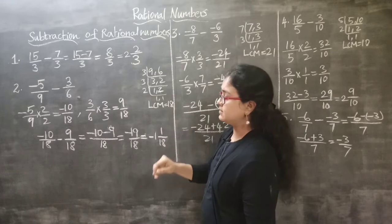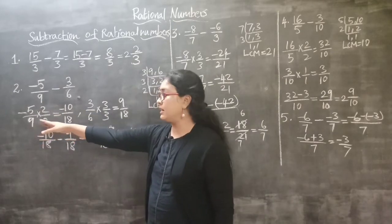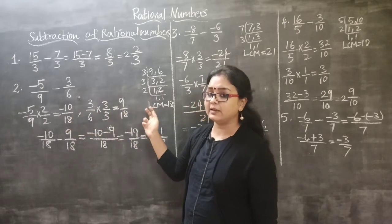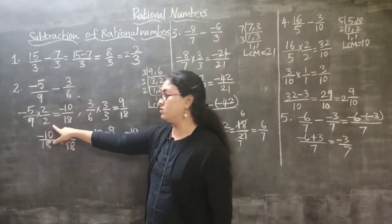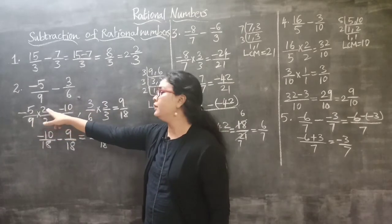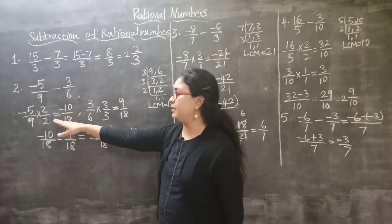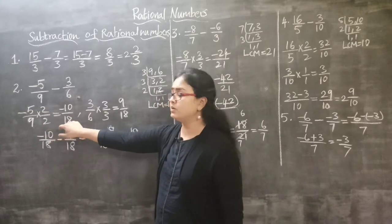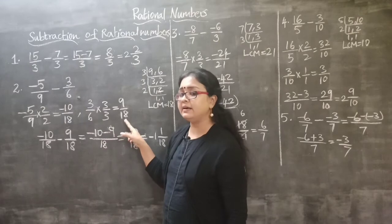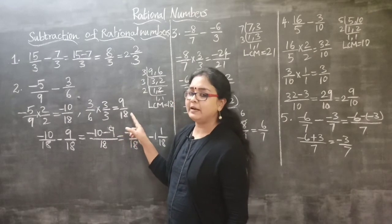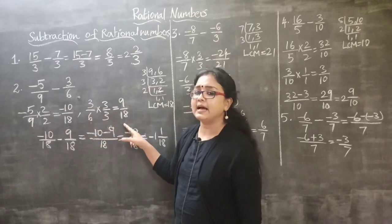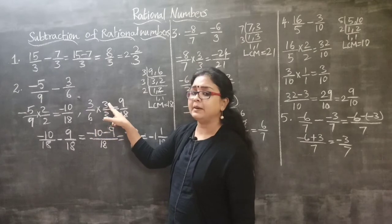For minus 5 by 9, I need to make the denominator 18. Since 9 times 2 equals 18, I multiply both numerator and denominator by 2. So minus 5 by 9 multiplied by 2 by 2 gives minus 10 by 18. For 3 by 6, I need the denominator to become 18 as well. Since 6 times 3 equals 18, I multiply by 3 by 3, which gives 9 by 18.